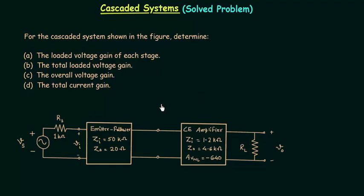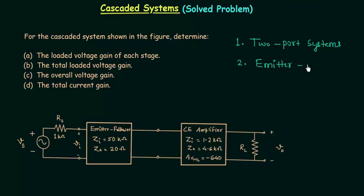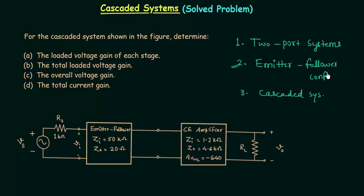This problem requires knowledge of three topics. The first one is two-port systems. The second one is emitter follower configuration. The third one is cascaded systems. We have already completed emitter follower configuration, two-port systems, and cascaded systems in the last lecture, so we have everything to solve this problem. We will use concepts from all three topics.